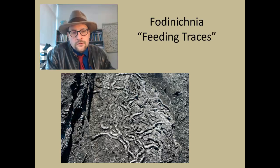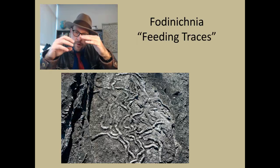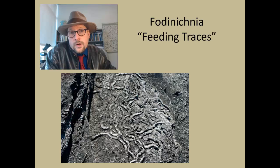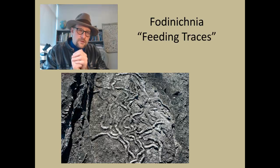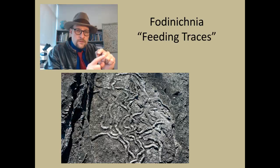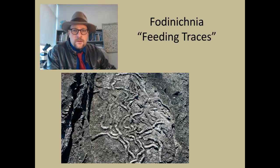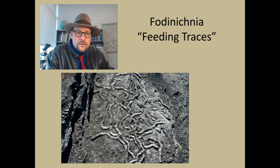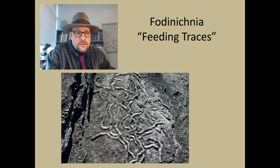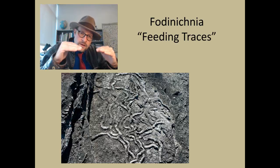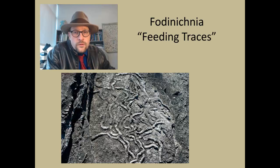The next one is feeding traces — fodinichnia — and these differ in that the traces are made often in the substrate itself, so they are deeper. They are not just grazing on the surface, but actually burrowing down and feeding on things, like what earthworms do. These can be mistaken for root traces, but what distinguishes them is that they go around in a systematic way in feeding through the substrate. These are often subterranean organisms — many worms, some mollusks — going through and feeding along in these traces.